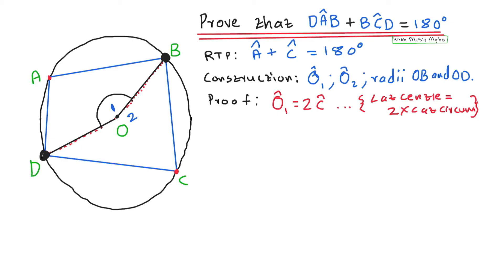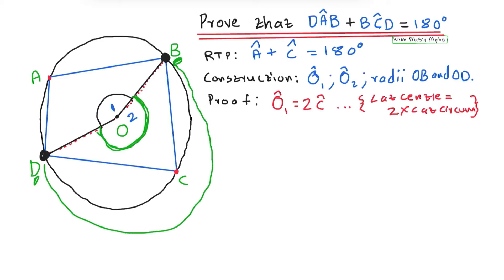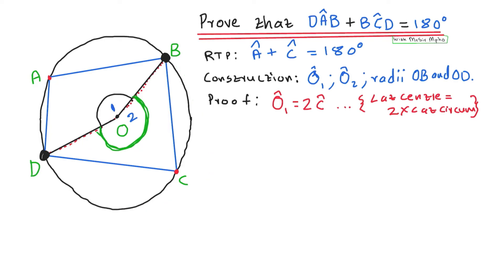Now for O2: the same arc DB also subtends O2 at the center and subtends angle A at the circumference. So the angle at the center O2 is twice the angle at the circumference A, meaning O2 equals 2 times angle A.